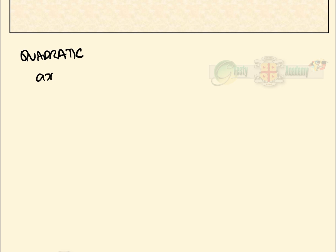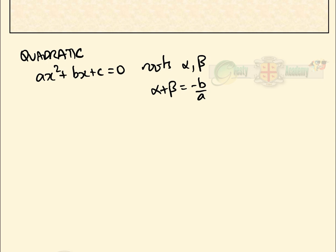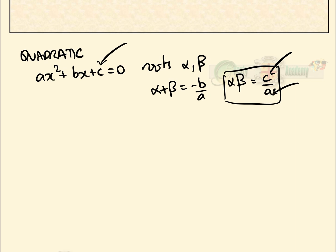For a quadratic, if we have ax² + bx + c = 0 with roots alpha and beta, then the sum of those roots alpha + beta equals -b/a, and the product alpha·beta equals c/a. The constant is c, the first coefficient is a, and that product is positive — we'll see why shortly.